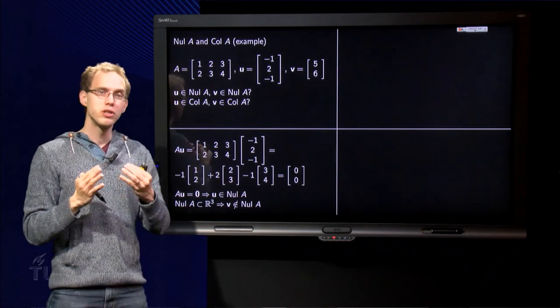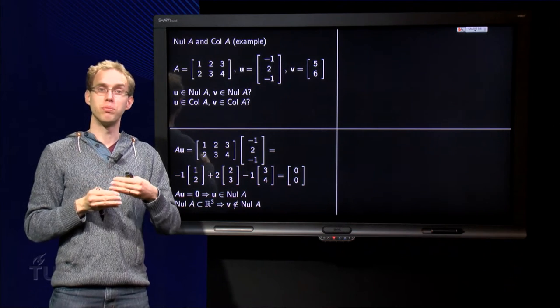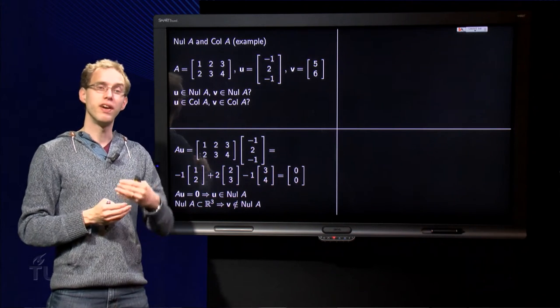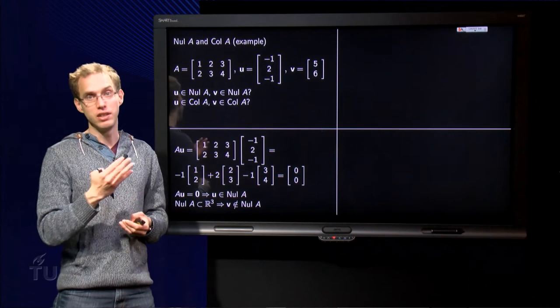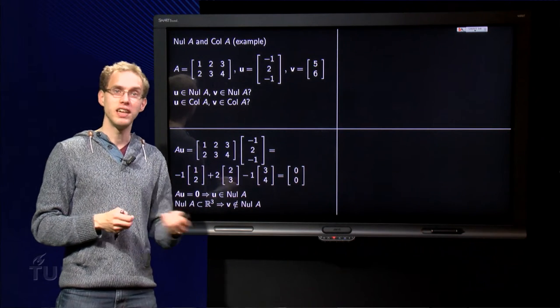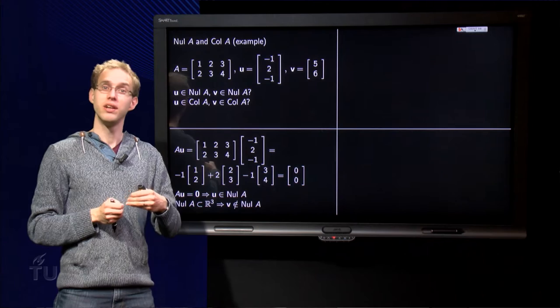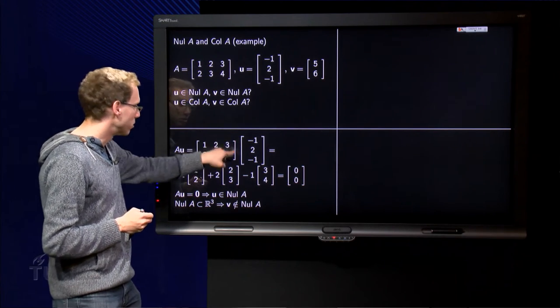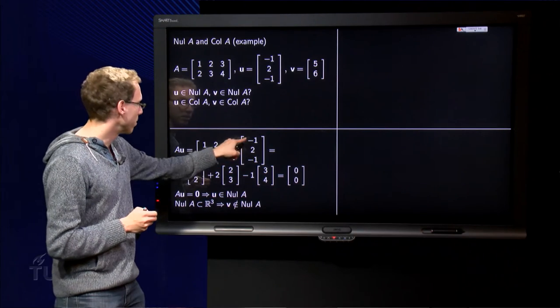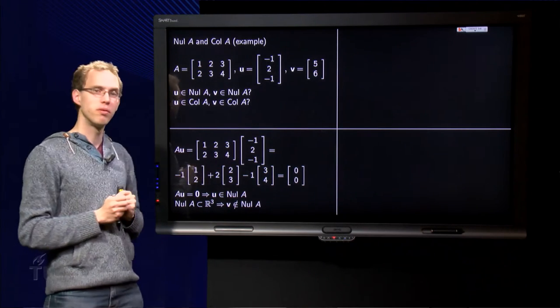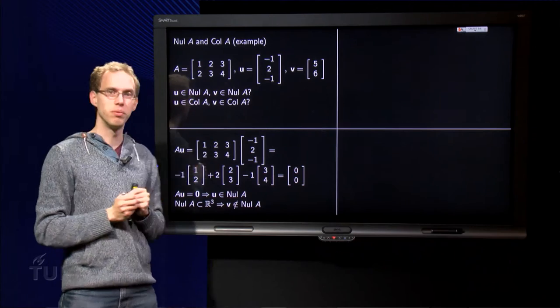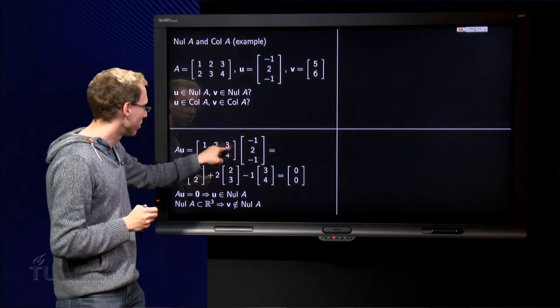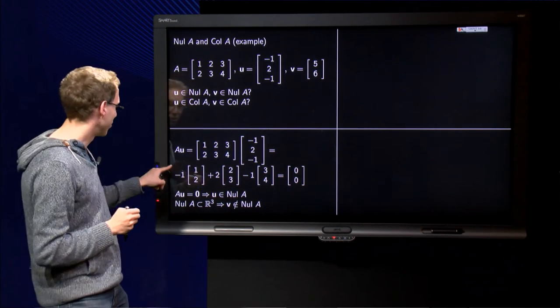In order to figure out whether the vectors are in null space, we have to compute A times u. If A times u equals zero, then u is in the null space, and if A times u is not equal to zero, then u is not in the null space. So we compute A times u over here. We get minus 1 times the first column of A, plus 2 times the second column of A, minus 1 times the third column of A. And what do we find?